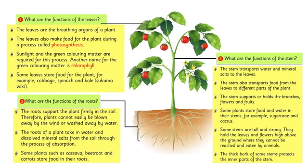Some stems are tall and strong. They hold the leaves and flowers high above the ground where they cannot be reached and eaten by animals. The thick bark of some stems protects the inner parts of the stem.